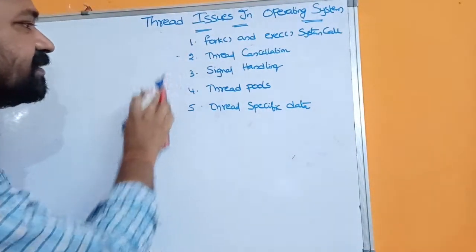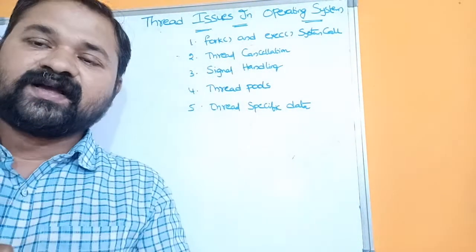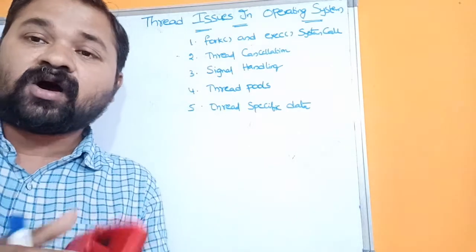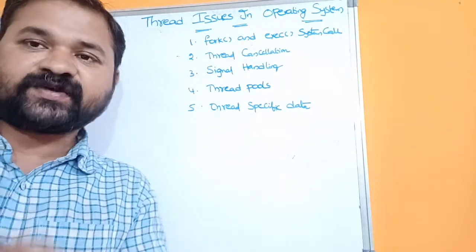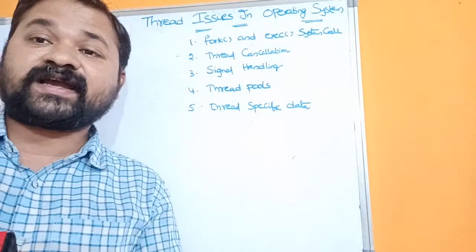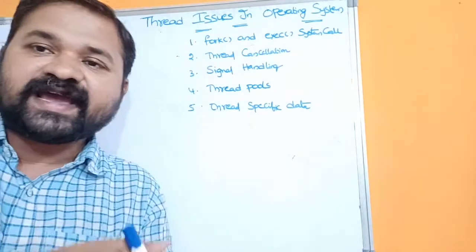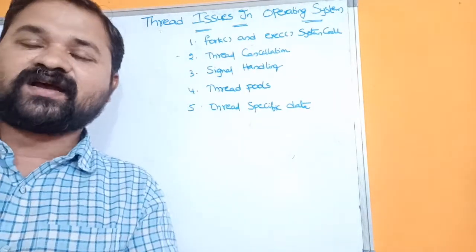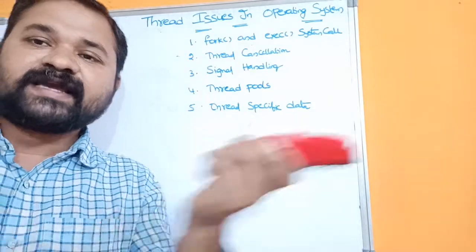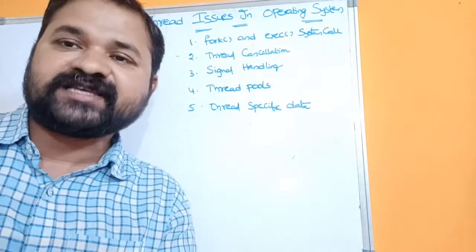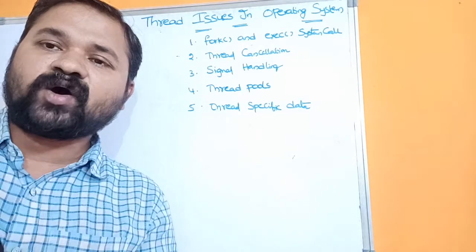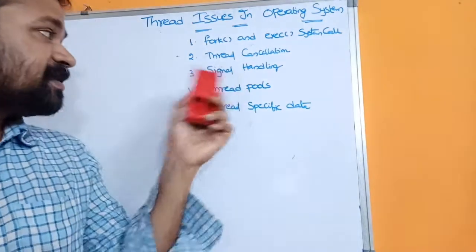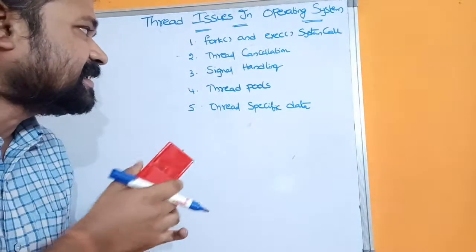The third issue is signal handling. A signal is a special notification which is sent from one process to another process, or a kernel may send a signal to a process. There are several types of signals — for example, if one process wants to kill another process, or if the kernel wants to kill a process, it sends a SIGKILL message. If there is an interrupt, the kernel may send an interrupt signal to the corresponding process. In Linux there are several signals useful for sending notifications to processes.